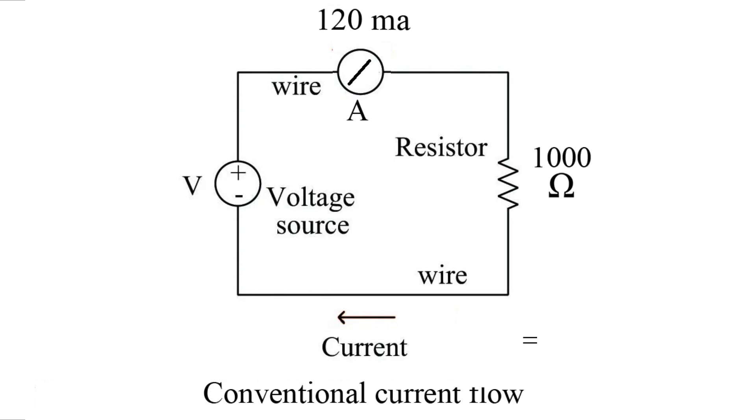I don't run into this very often, but our last example is we know the amps is 120 milliamps, we know the resistance is 1000 ohms. Let's figure out the voltage. Our formula is voltage equals current times resistance. So we take 0.12 times by 1000, and we end up with 120 volts.